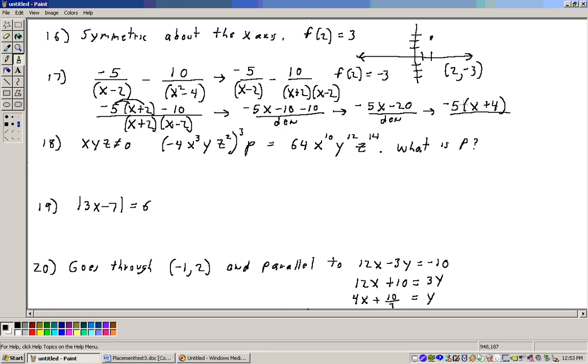You can check that by multiplying it back through. And then they've foiled this together, the denominator. If you foil that together, that's your x squared minus 4. And nothing else simplifies after that. And that is answer B.